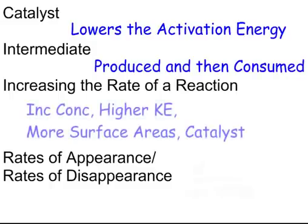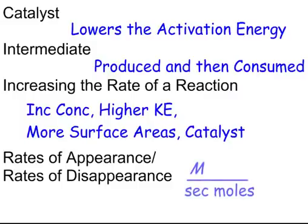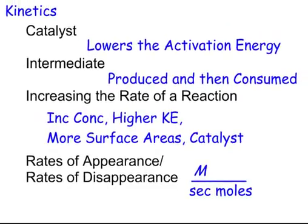What would increase the rate of reaction? We've got four things. Increased concentration, higher kinetic energy, crush it up, more surface areas, and add a catalyst. And remember, if you're doing a rates of appearance or disappearance, just do stoichiometry. Just do molarity per second, and divide by your number of moles. Do a molar ratio is all you're doing for that. So just set up a proportion.